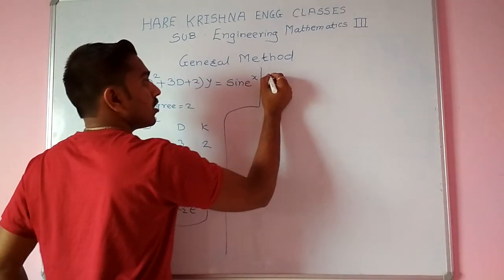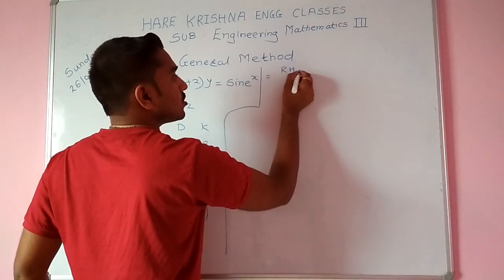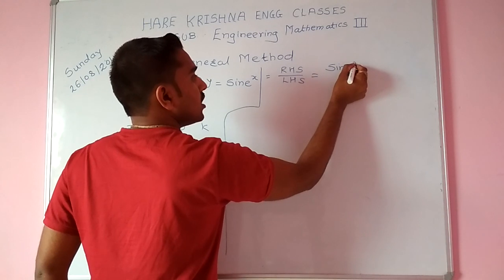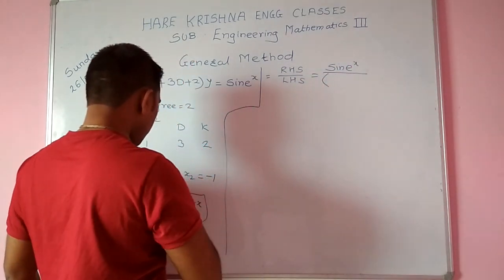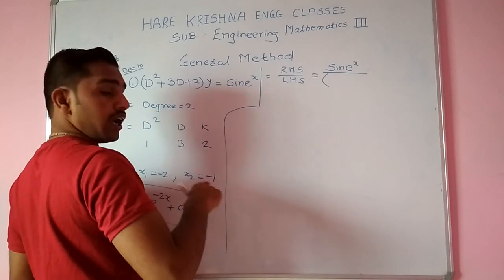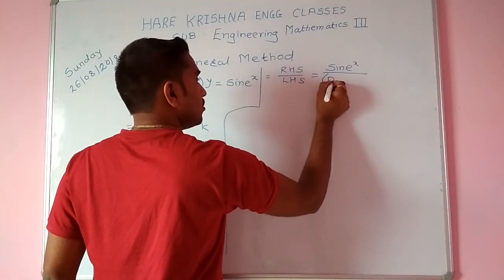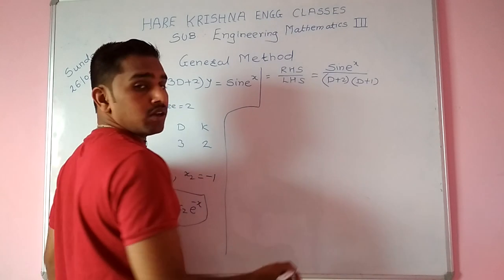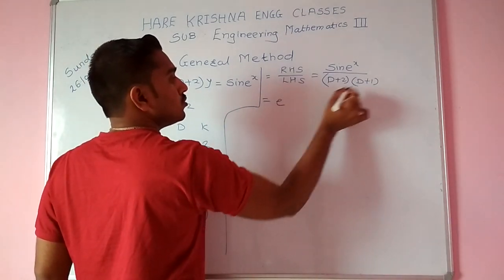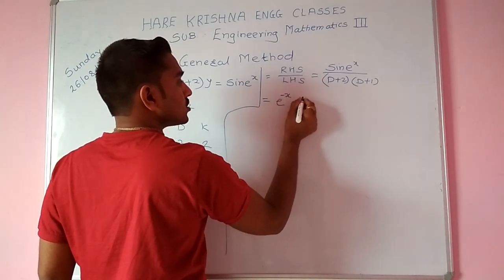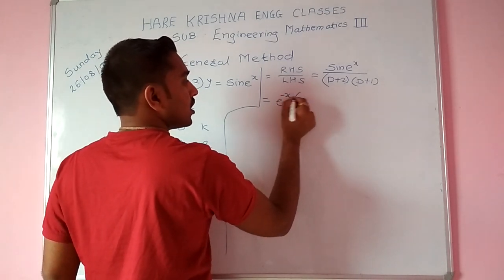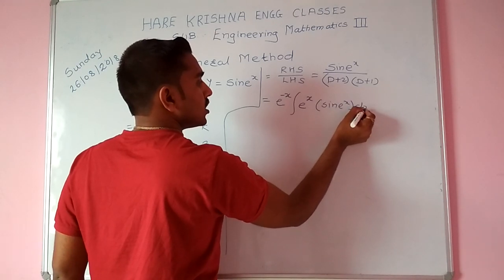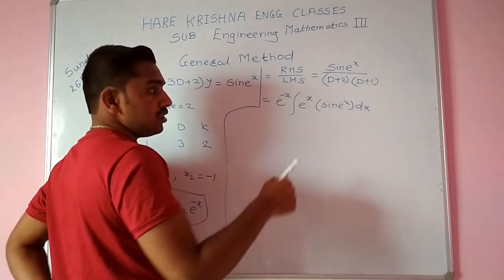Now we find the particular integral yp using the general method. We take RHS divided by LHS, that is, sin(eˣ) divided by the operator expression, integrating with respect to dx.